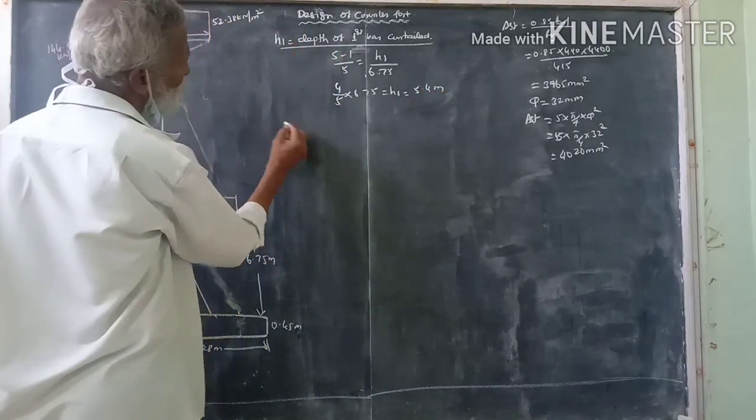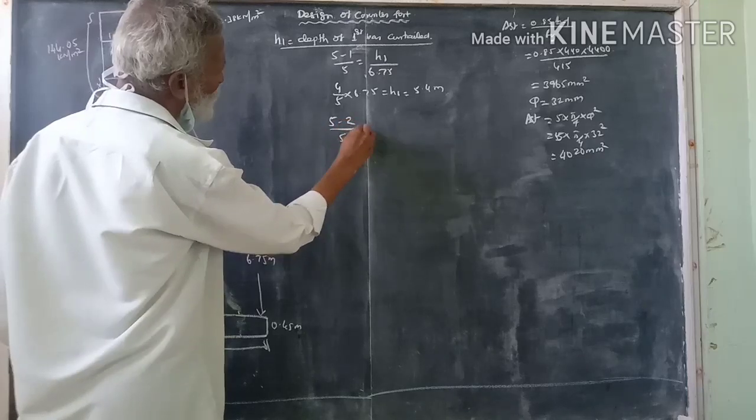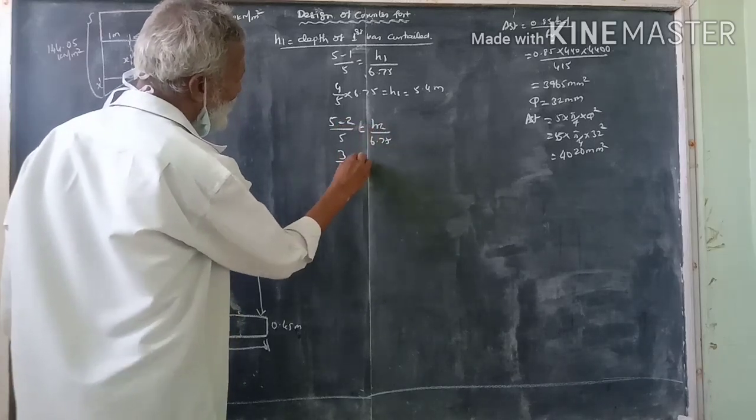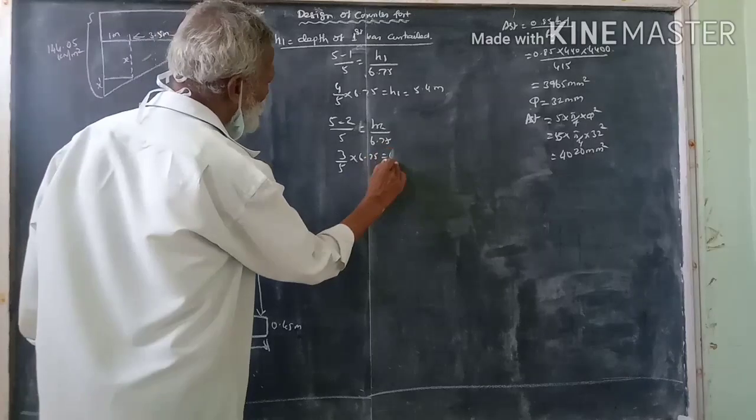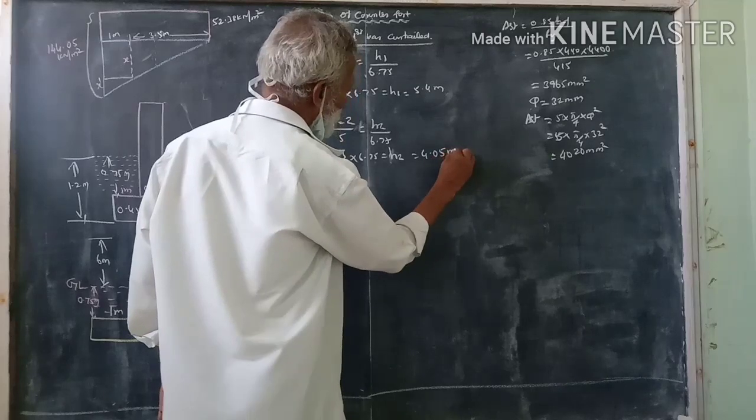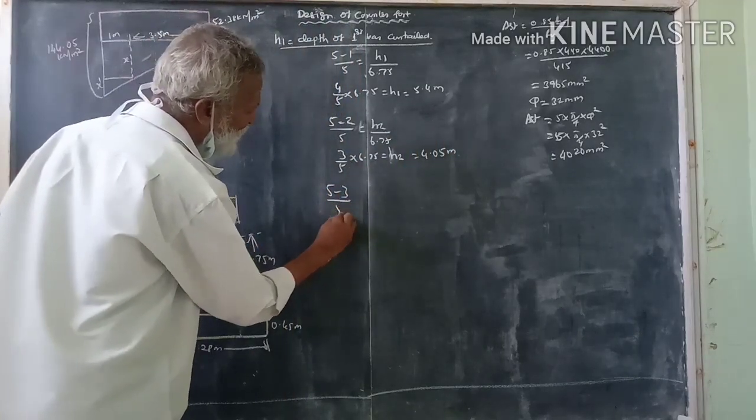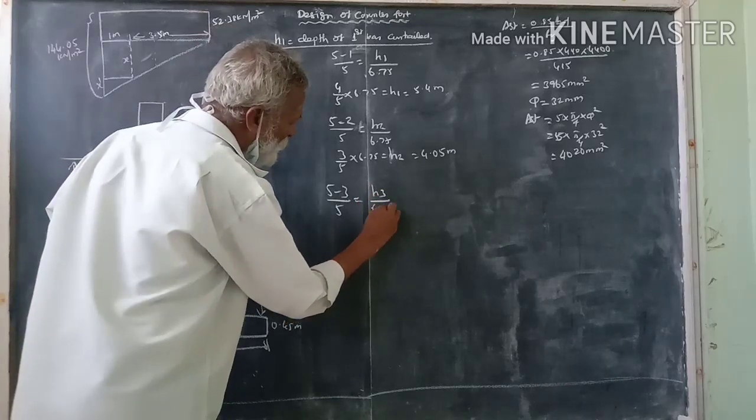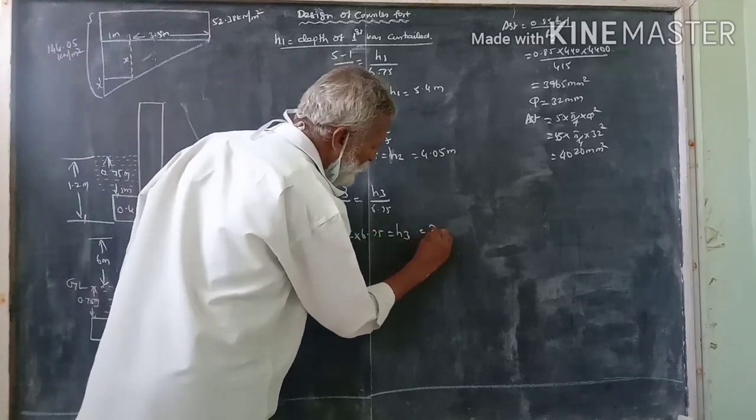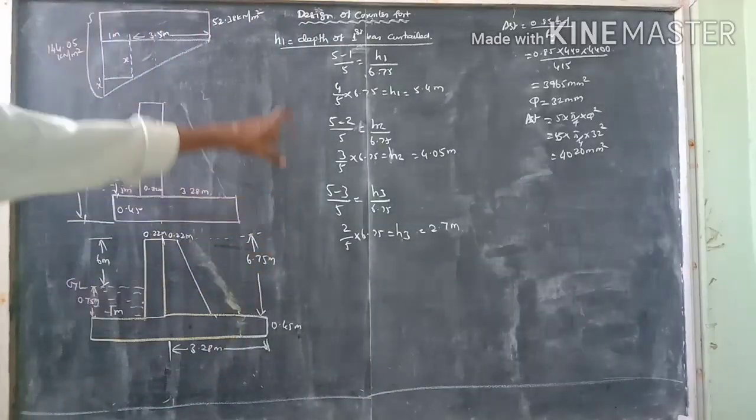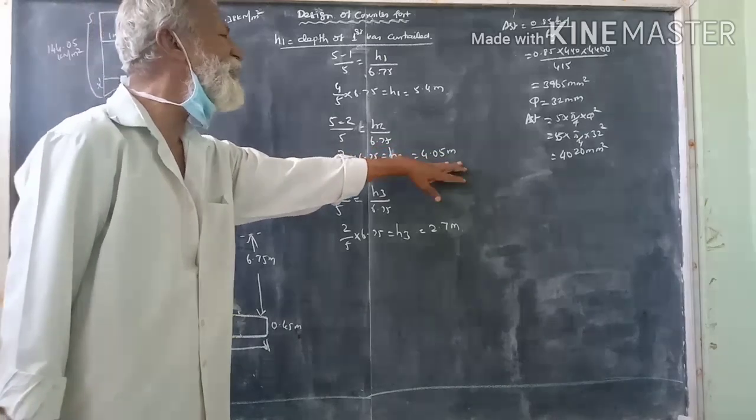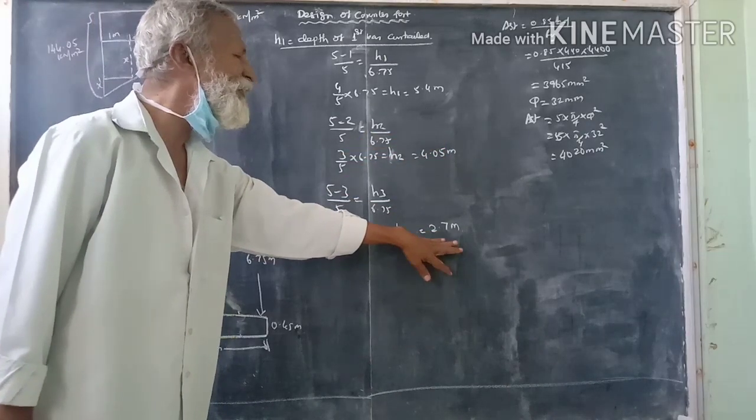For H2, 5 minus 2 divided by 5 into H2 by 6.75, 3 by 5 into 6.75 is equal to H2 4.05. H2 is equal to 4.05 meters. The third bar, 5 minus 3 by 5, H3 by 6.75, that is 2 by 5 into 6.75 is equal to H3, 2.7. The third bar is 5.4 meters, first bar height, second bar is 4.05 meters, third bar is 2.7 meters.